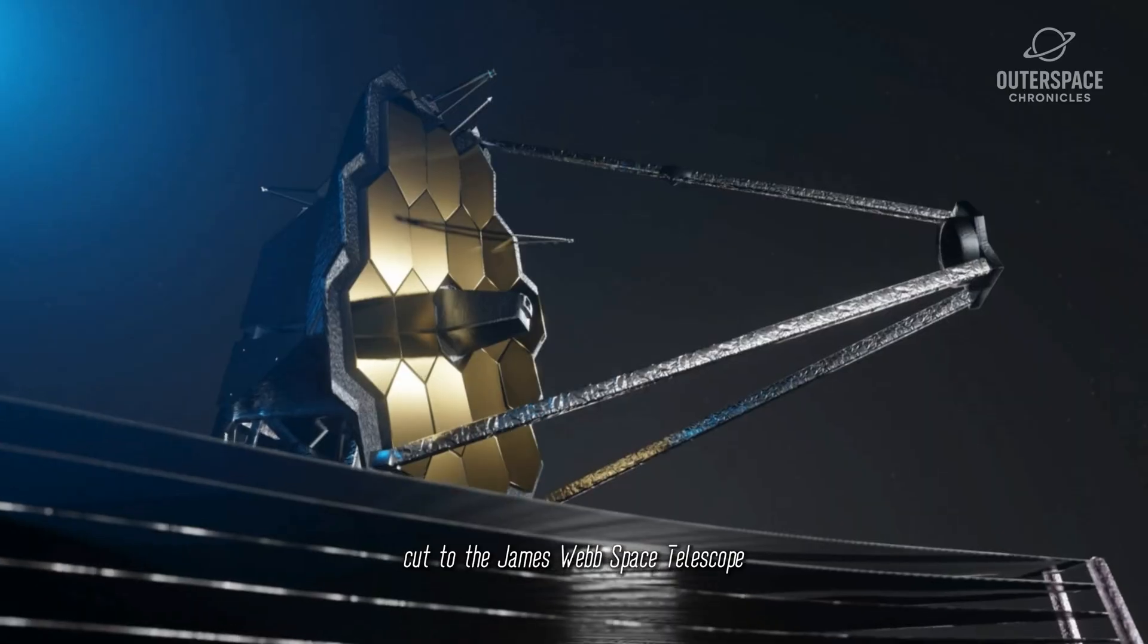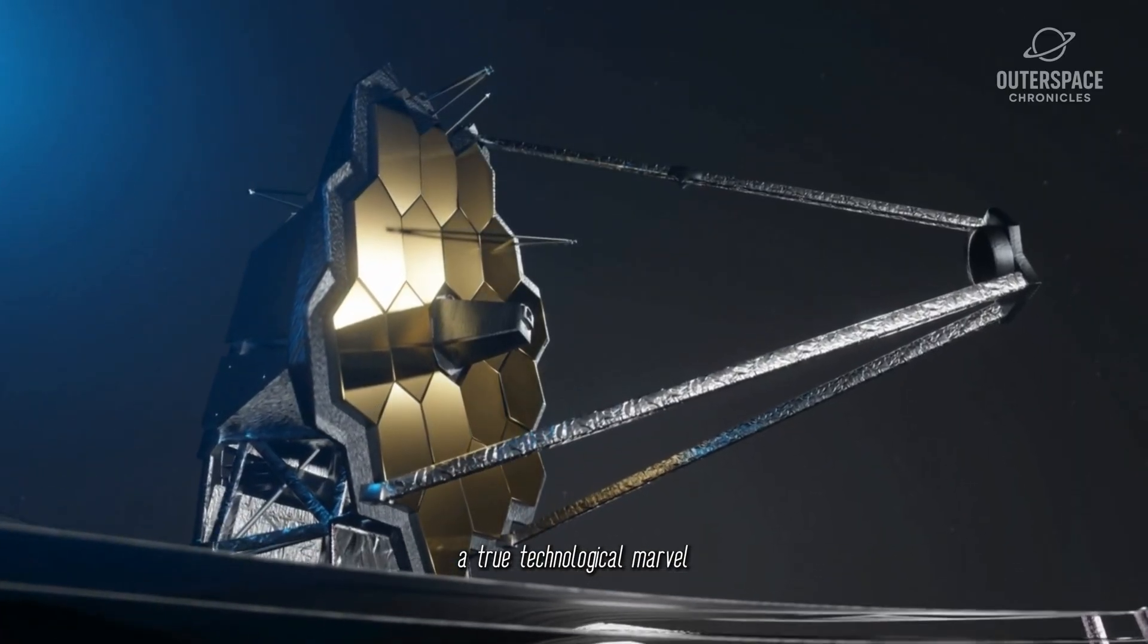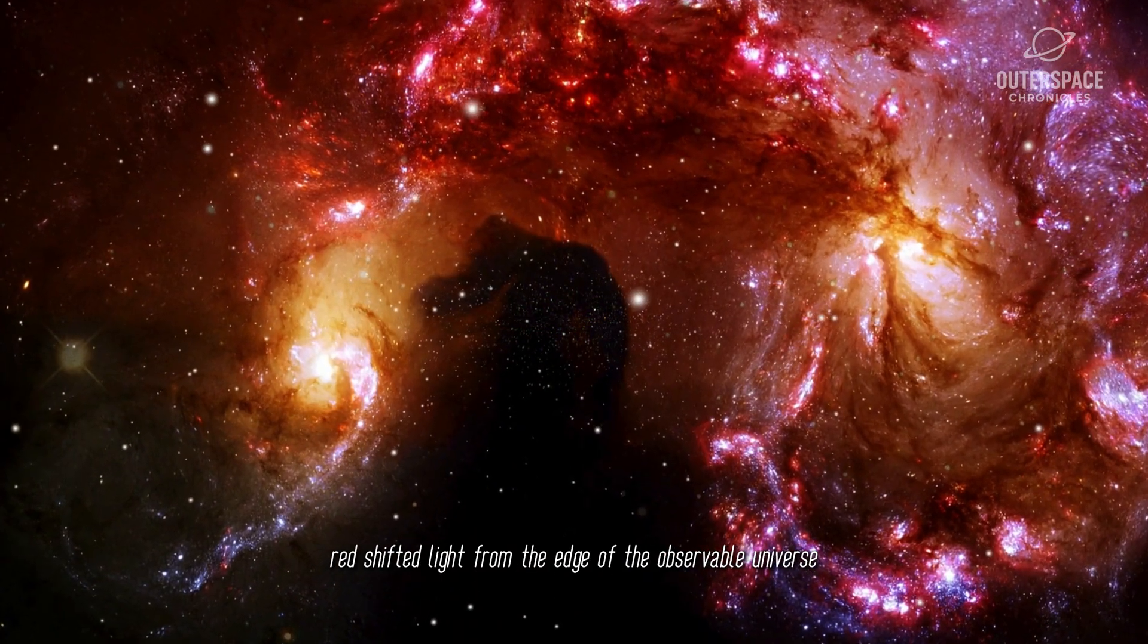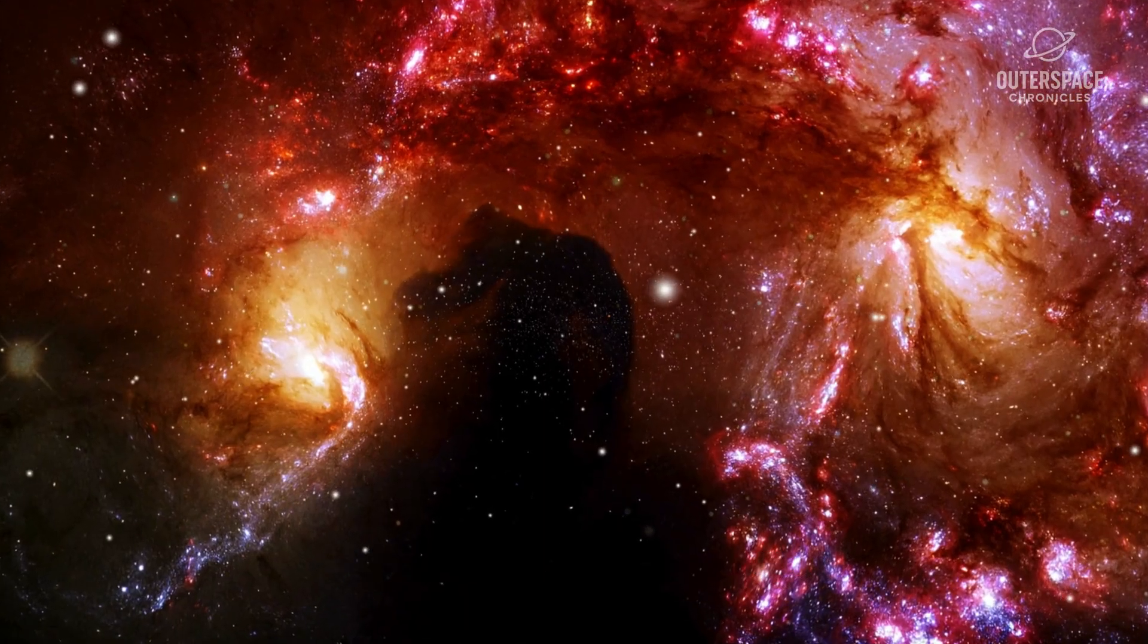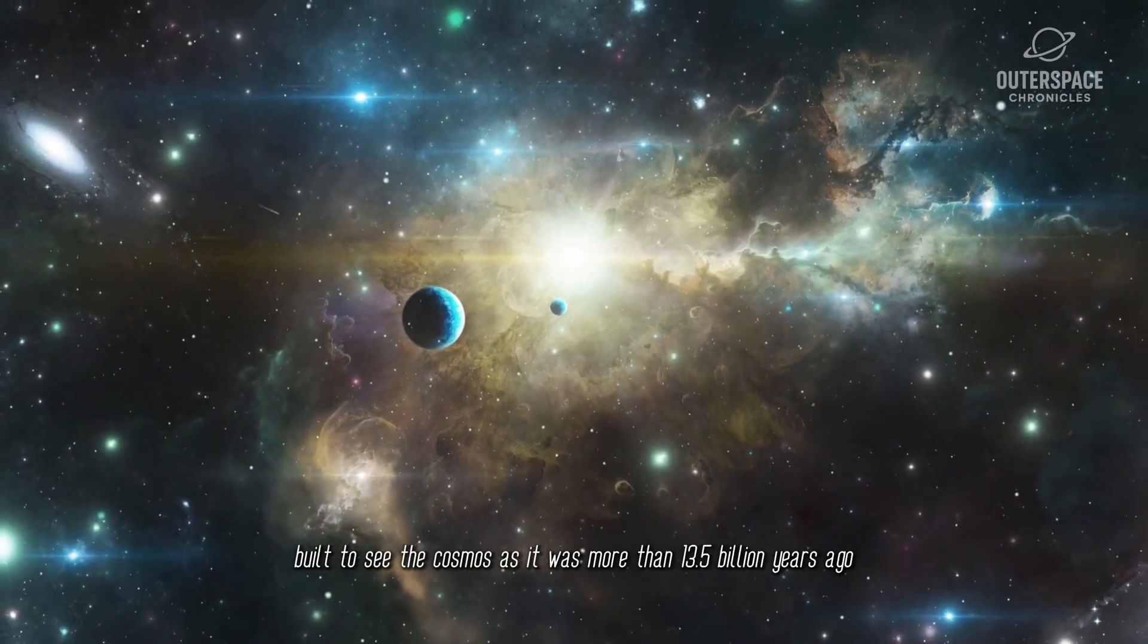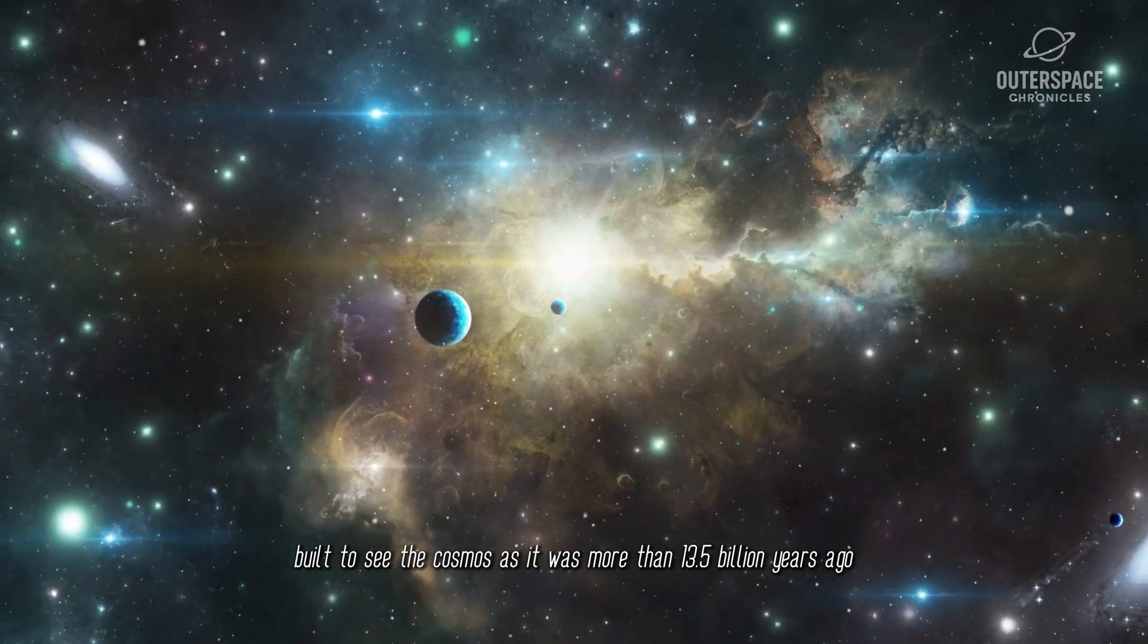Cut to the James Webb Space Telescope, a true technological marvel. Its massive golden mirror was designed to capture the faint red-shifted light from the edge of the observable universe. It is a time machine, built to see the cosmos as it was more than 13.5 billion years ago.